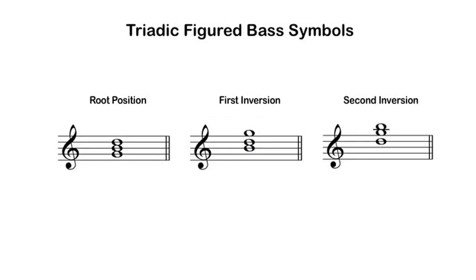Let's look at our most compact presentations of all three triadic inversions. For the root position triad, we would need a fifth and a third above the notated bass, so we could write the symbol five-over-three. First inversion has a sixth and a third, so the symbol would be six-over-three. And second inversion has a sixth and a fourth, so the figure would be six-over-four.